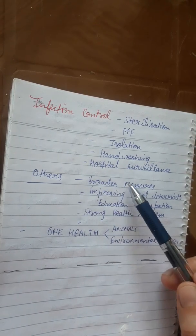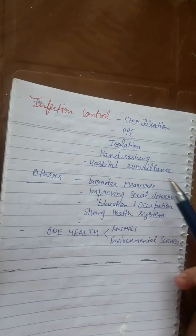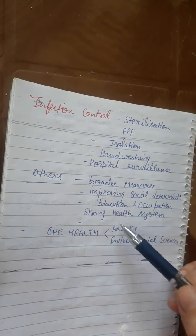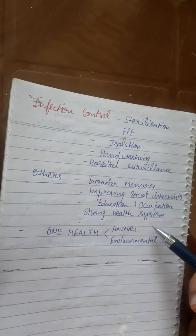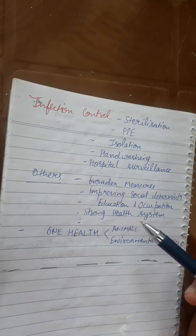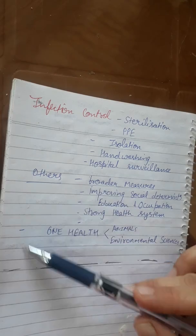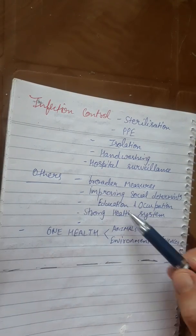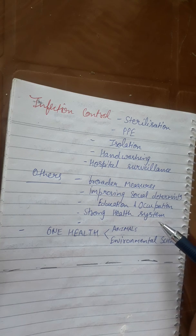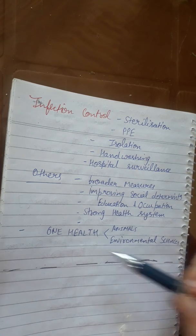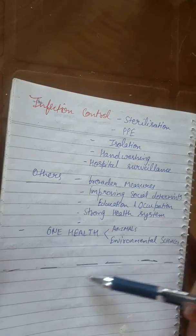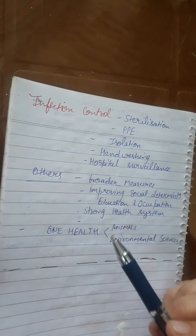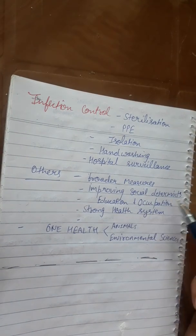There are broader measures to prevent infectious disease, like improving social determinants — education, occupation, a strong health system, and proper healthcare services. This is called the one health concept, which can be coordinated across branches including veterinary sciences and environmental sciences. That is how the agent-host-environment epidemiological triad works for prevention and control of infectious disease.